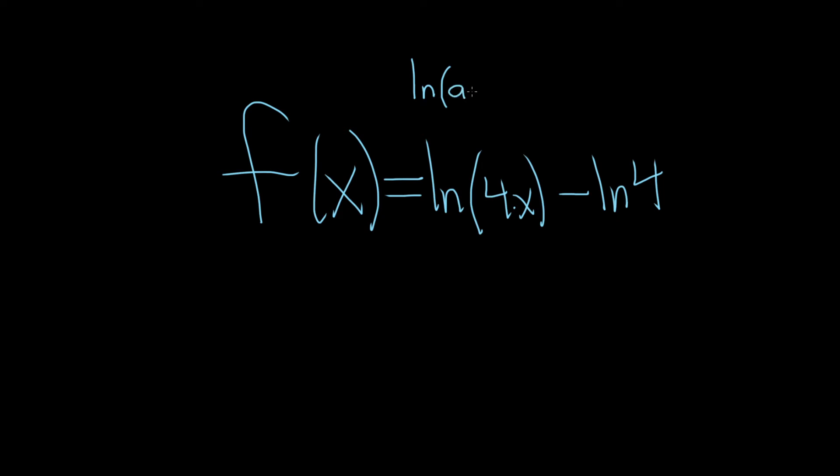If you have the natural log of a times b, what happens is this becomes the natural log of a plus the natural log of b. So the multiplication turns into addition.